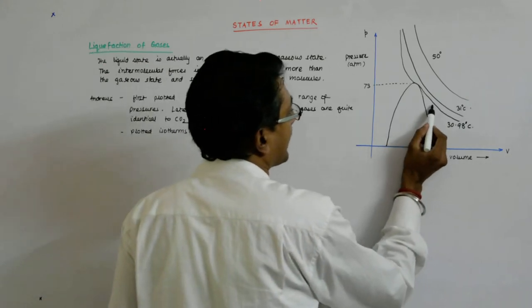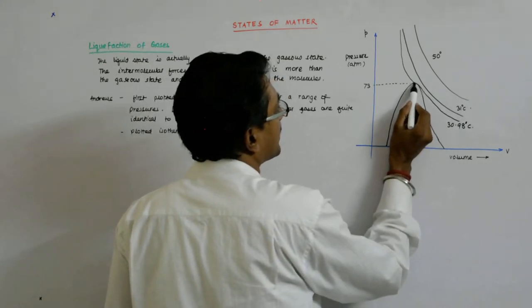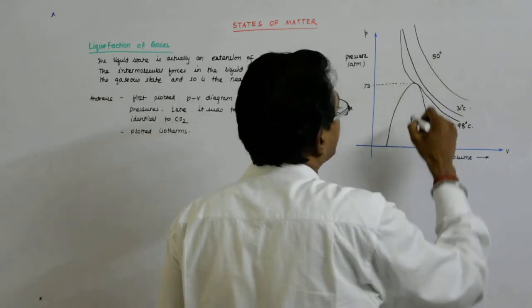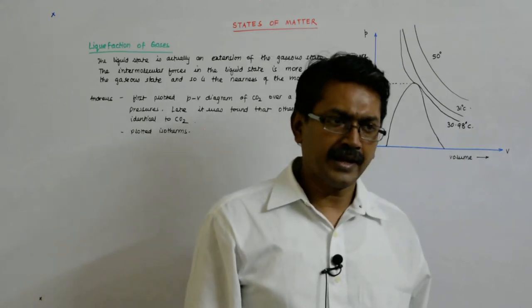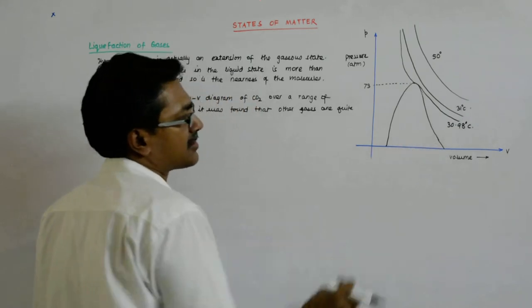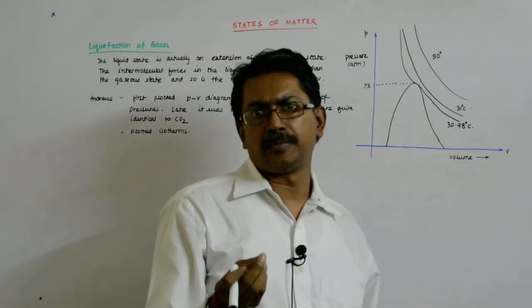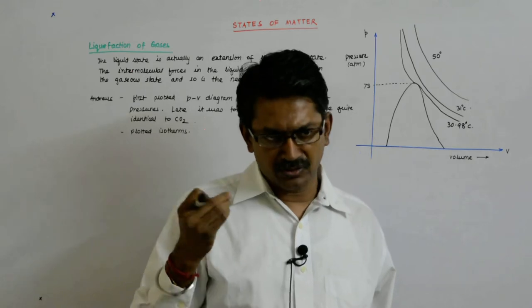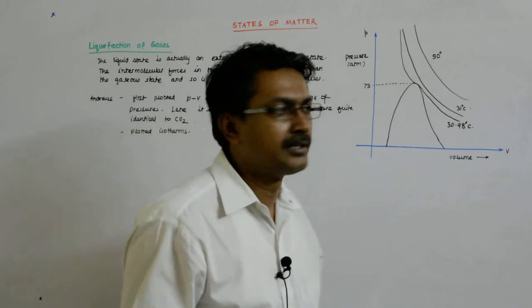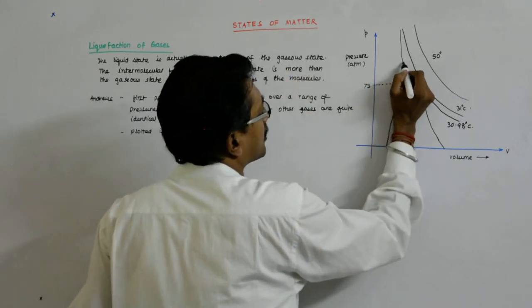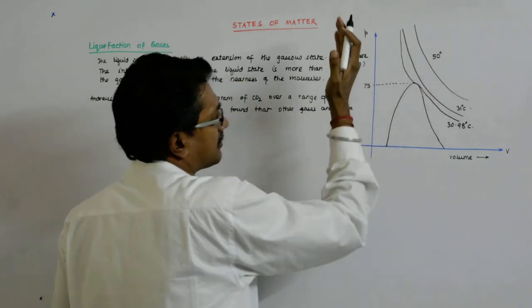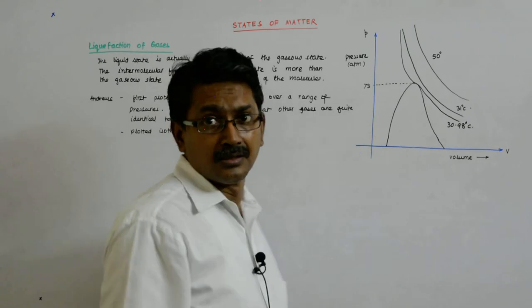Here it was gas when it touched the peak, and here it is all liquid. You will see that this line has become very sharp. Why? Because now for an incremental change in volume — per unit change in volume — the amount of pressure that you have to increase is very, very high. Because it has all got converted into liquid. So beyond this point, it is all a liquid.